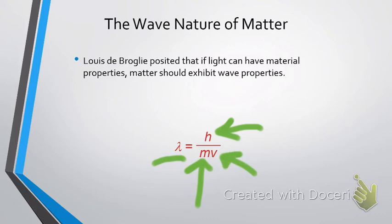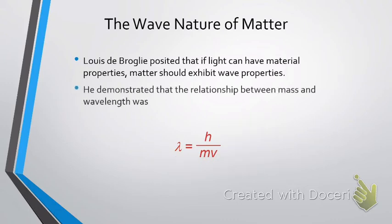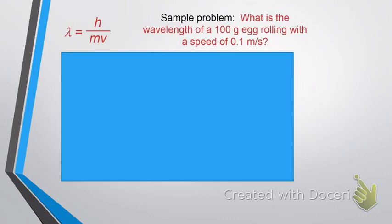So, let's look at an example. He demonstrated that there is this relationship between mass and wavelength. So, let's determine what the wavelength of a hundred gram egg is if it's rolling with a constant velocity of 0.1 meters per second. So, once again, you may want to pause the video now in order to try to solve this on your own.